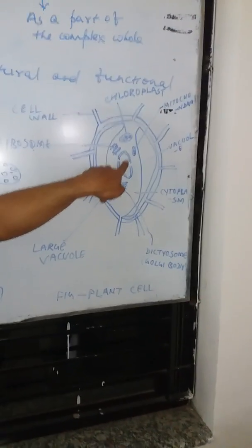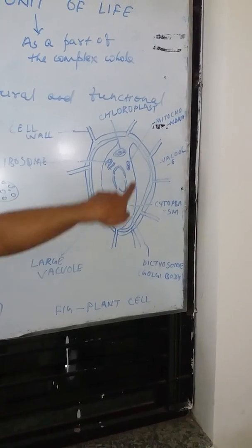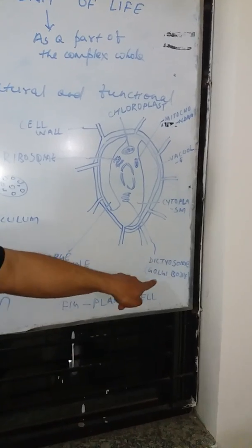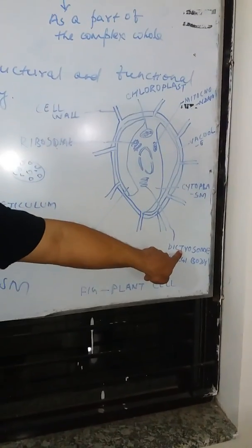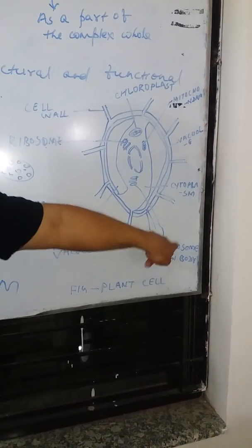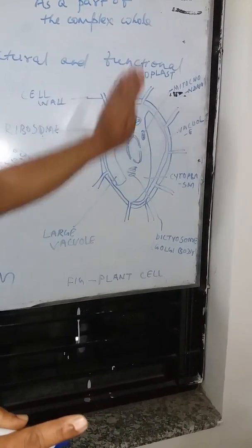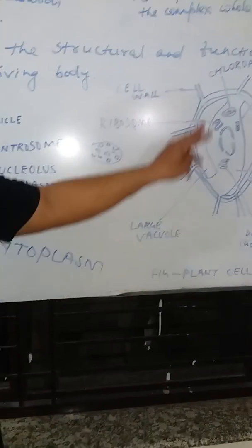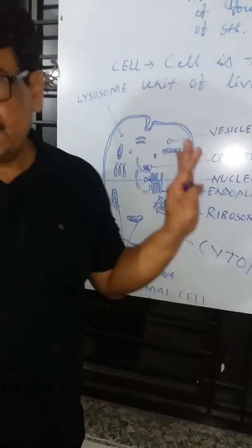The plant cell also has a nucleus with a double membranous structure and nucleolus. A structure comparable to the Golgi body of an animal cell is called the dictyosome in plant cells. The plant cell also has large vacuoles, mitochondria, and chloroplast — these are the typical structures of a plant cell. That covers plant cell and animal cell for today, and next day we will discuss more about this.